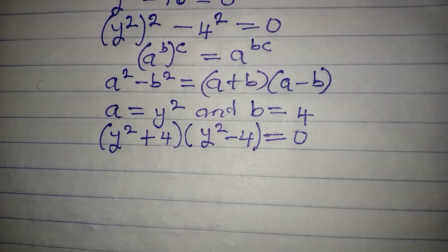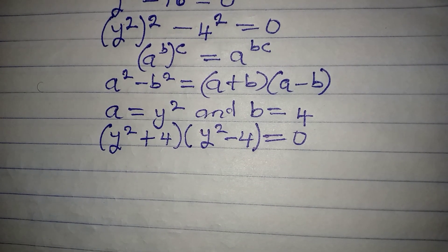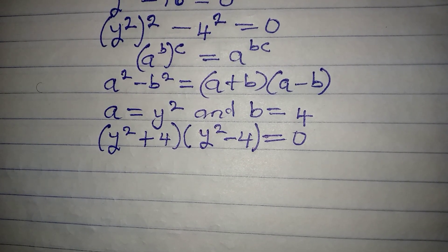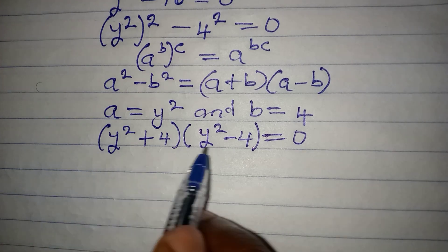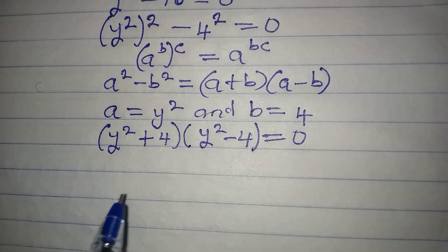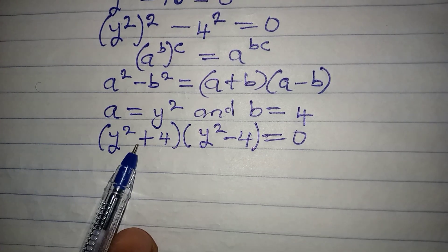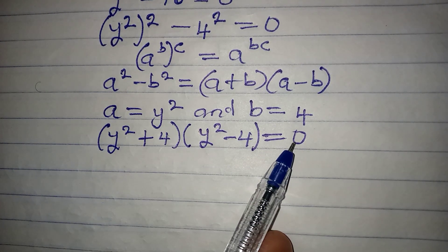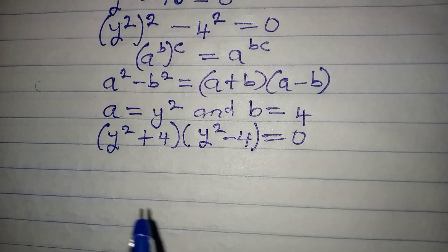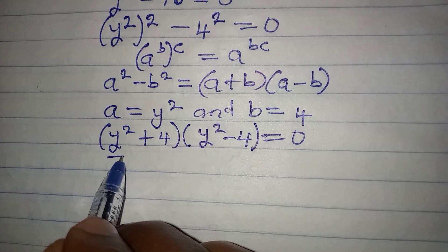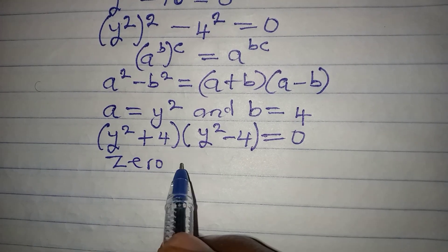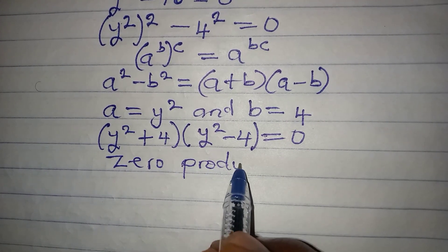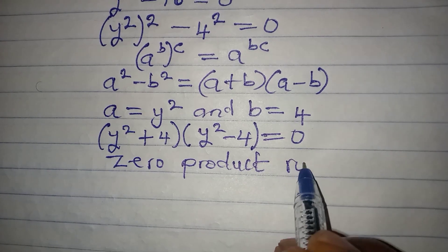Now, what can we apply? We can apply the zero product rule, because we have these two factors multiplying together to give us 0.